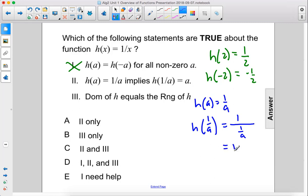So 1 times a over 1, because we can flip it. 1 over a becomes a over 1 and multiply it. So that does become a. So this one is true.